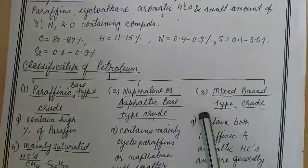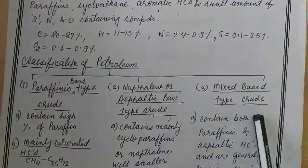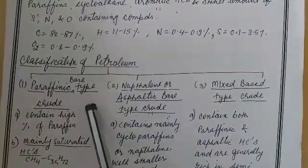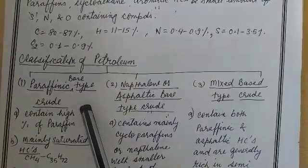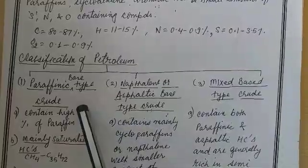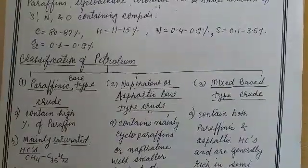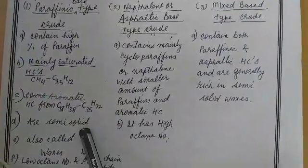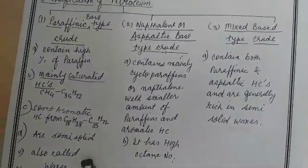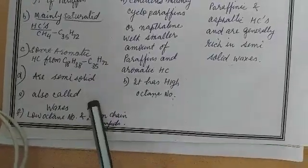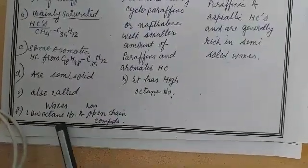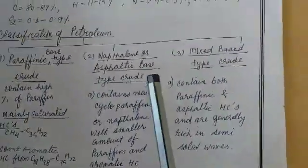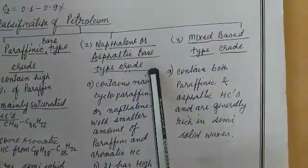Classification of crude petroleum: It is of three types — paraffinic base type crude, naphthenic or asphaltic base type crude, and mixed base type crude. Paraffinic base crude contains straight-chain alkanes with carbon 1 to carbon 35. Some aromatic hydrocarbons are also present. They are in a semi-solid state and are also known as waxes. They have a low octane number and are rich in open-chain compounds.